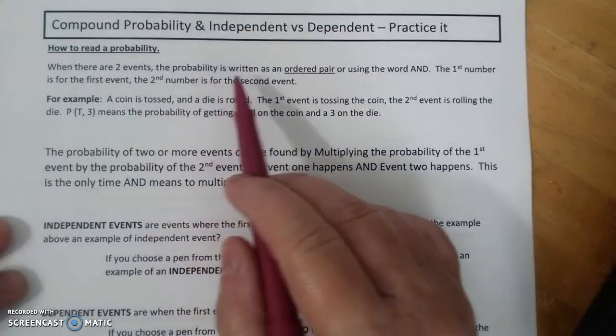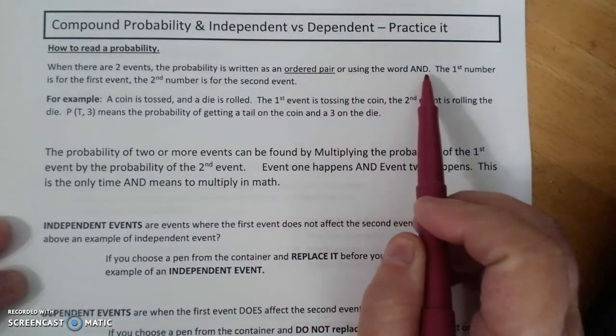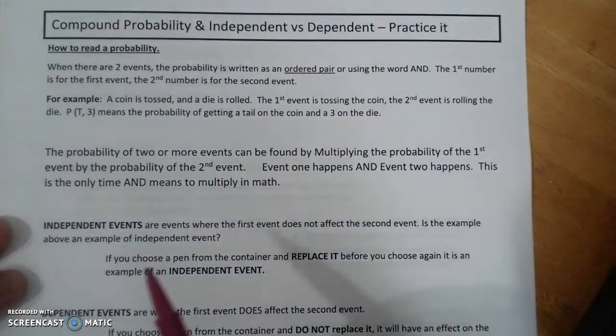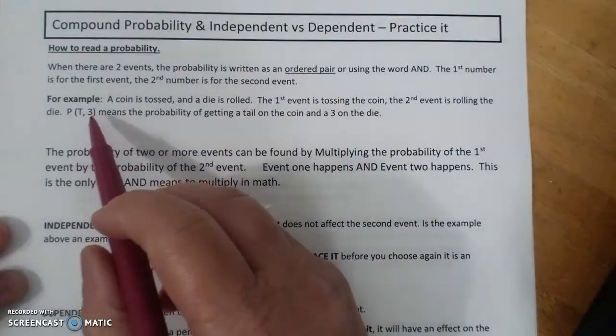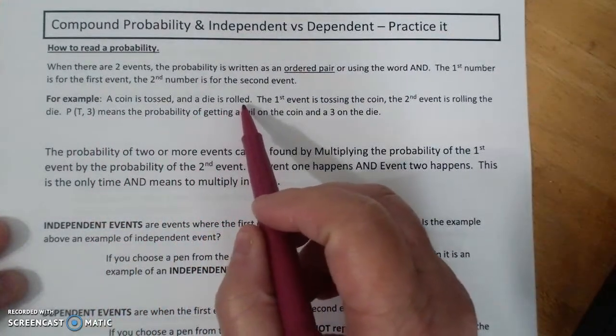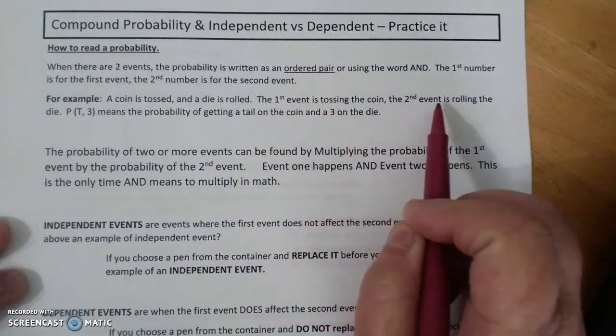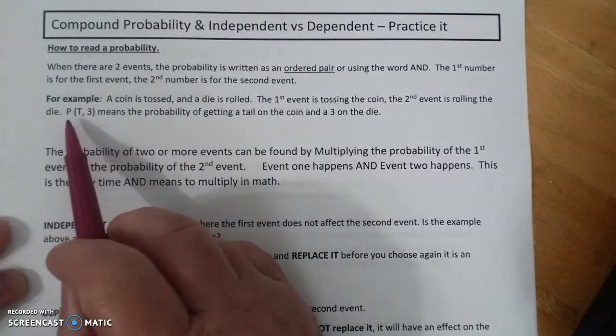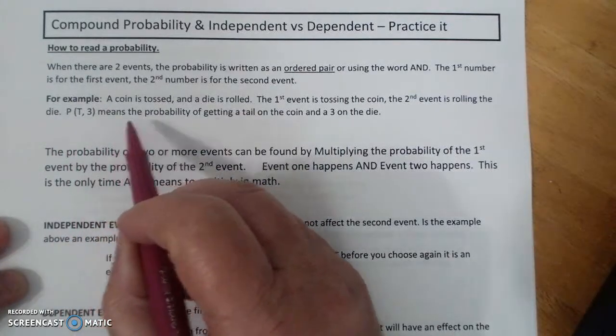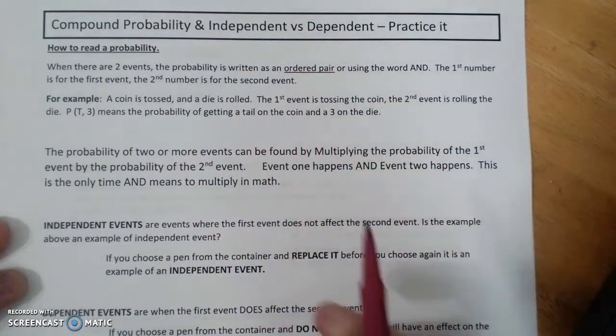When there are two events, the probability is written as an ordered pair or using the word and. The first number is for the first event, and the second number is for the second event. Yes, order does matter. For example, a coin tossed and a die rolled. The first event is tossing the coin, and the second event is rolling the die. So they would ask P(T,3), which means the probability of getting a tail on a coin and a three on the die.